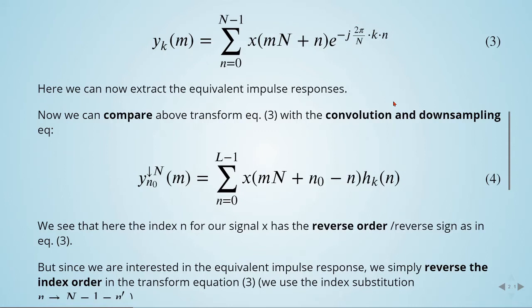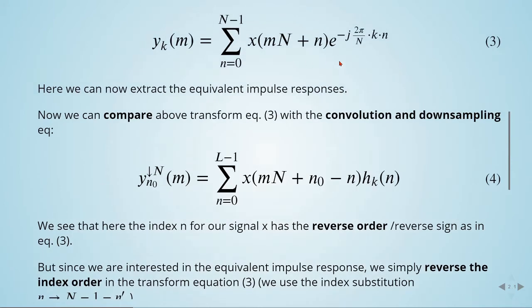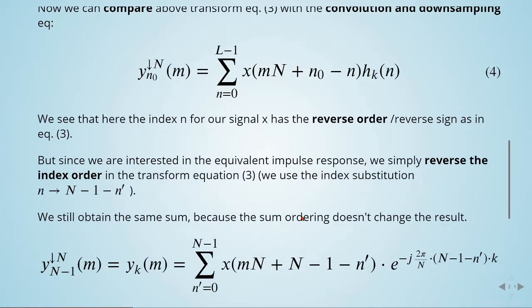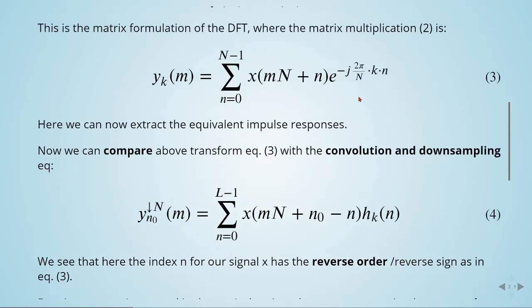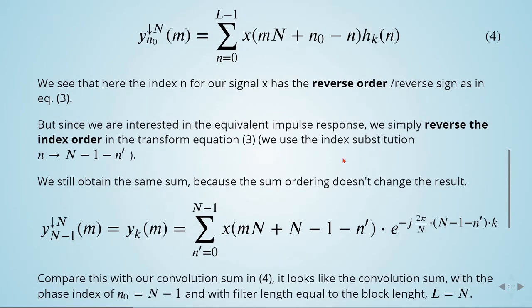But since we are interested in the equivalent impulse response, we simply reverse the index order in transform equation 3. We use index substitution where n is substituted by N-1-n'. We substitute n by this, and we still obtain the same sum because the sum ordering doesn't change the result.